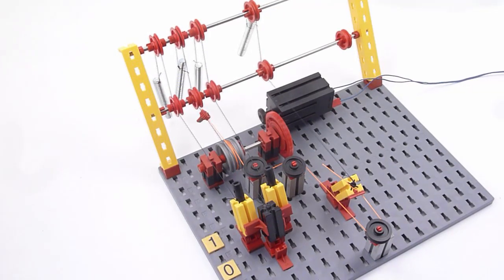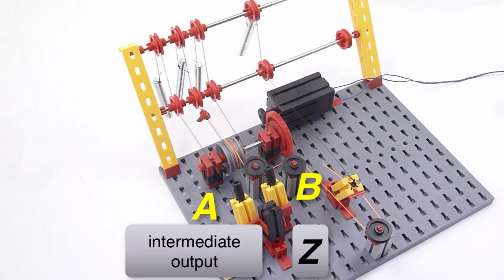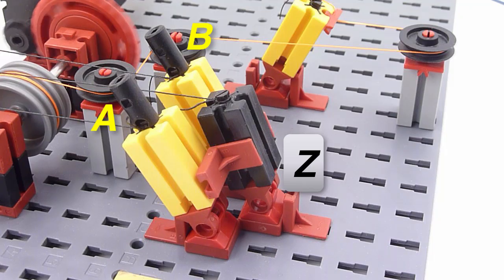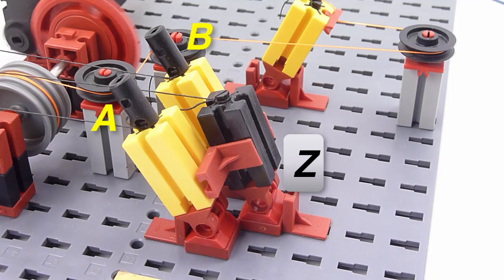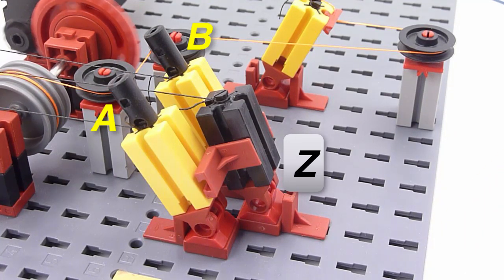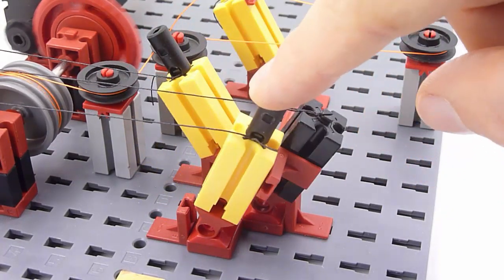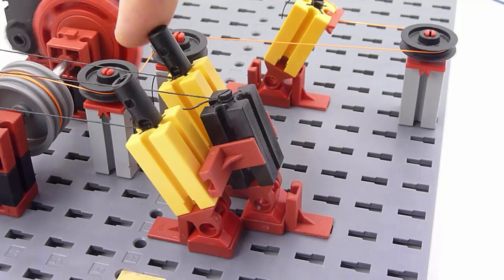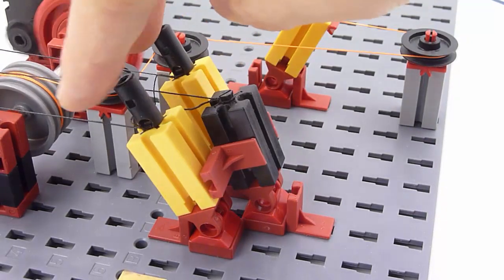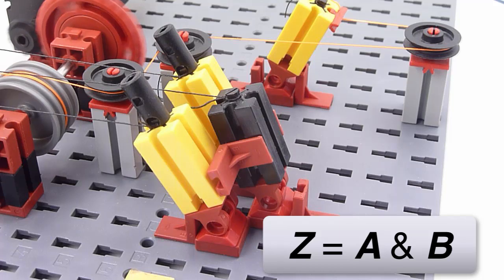We have two input levers A and B and one output lever Z. The output lever is 1 if and only if both inputs A and B are 1. If one pulls A or B to zero, Z is forced to go to zero as well. Thus, Z is equal to A AND B.